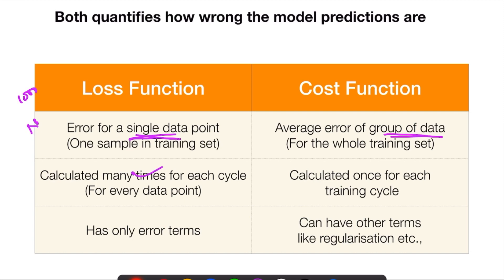Loss function gets calculated many times. Whereas cost function is the average of all these loss functions, calculated only once per training cycle across all training samples. In the loss function, there are only error terms between the predicted value and the ground truth or target.